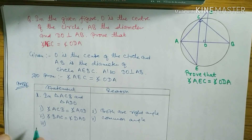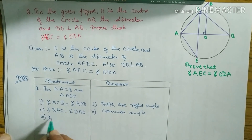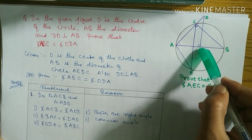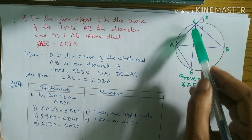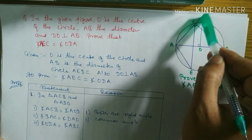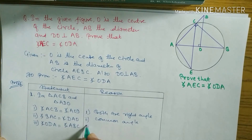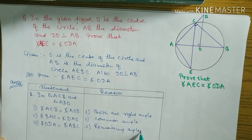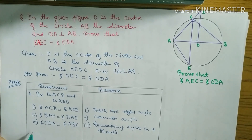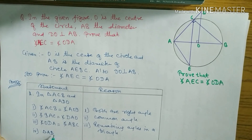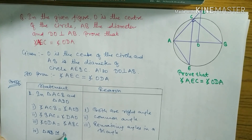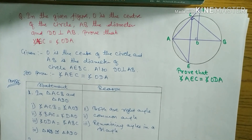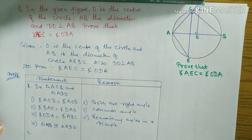If two angles of two triangles are equal, the third angle is also equal. So statement three: angle ODA equals angle ABC — the remaining angles of the triangle are equal. Statement four: triangle ACB is congruent to triangle ADO by the AA congruency test.